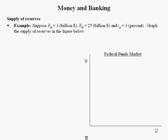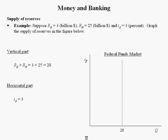Let's do an example. Suppose borrowed reserves equals $3 billion, non-borrowed reserves equals $25 billion, and the discount rate is 3%. Graph the supply of reserves. The vertical part is just the sum of borrowed reserves and non-borrowed reserves, so $28 billion. The horizontal part is just the discount rate, which equals 3. So the supply of reserves curve is the kinked supply curve that starts at $28 and takes it right at $3. We label that L-shaped diagram the supply of reserves.